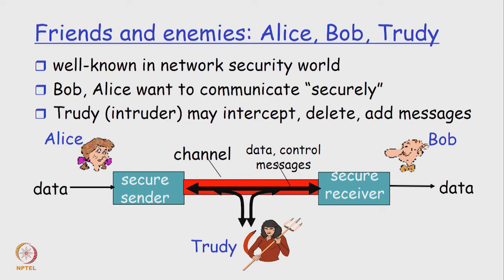In a network, two people trying to communicate are friends, and there are enemies who want to intercept their communication. In the literature of cryptography, Alice and Bob are always friends, and there is always a Trudy who is the interceptor. Alice wants to send a message to Bob through a secure sender that encrypts it and a secure receiver that decrypts it. But Trudy sits in between, capturing whatever is sent and trying to interpret it.